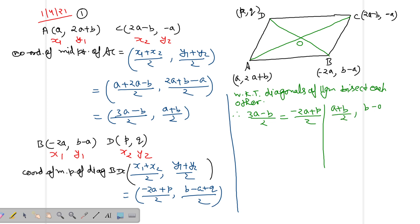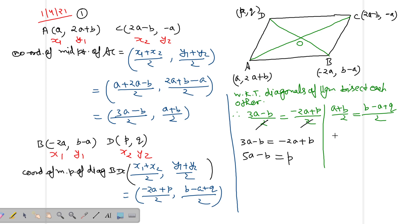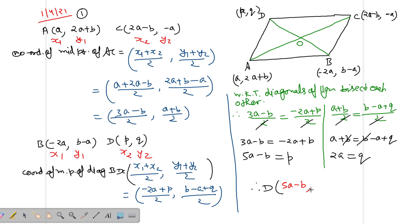Since diagonals bisect each other, we set the X-coordinates equal and the Y-coordinates equal. From the X-coordinate: 2 cancels, giving A + B = -2A + P, so P = 5A - B. From the Y-coordinate: B - A + Q = A + B, B cancels, giving Q = 2A. So the fourth vertex D has coordinates P = 5A - B and Q = 2A.